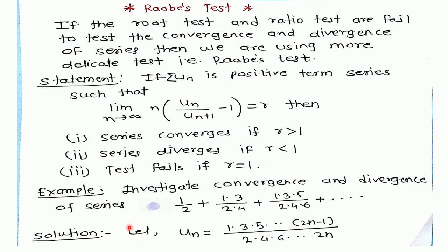Let's look at some examples. Investigate the convergence and divergence of the series: 1/2 + (1·3)/(2·4) + (1·3·5)/(2·4·6) + ... In the numerator, the product of odd terms is given, and in the denominator, the product of even terms is given. In the first term, only the first odd term is in the numerator and the first even term is in the denominator.